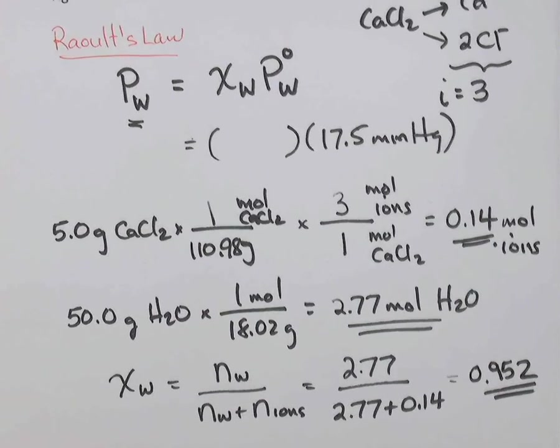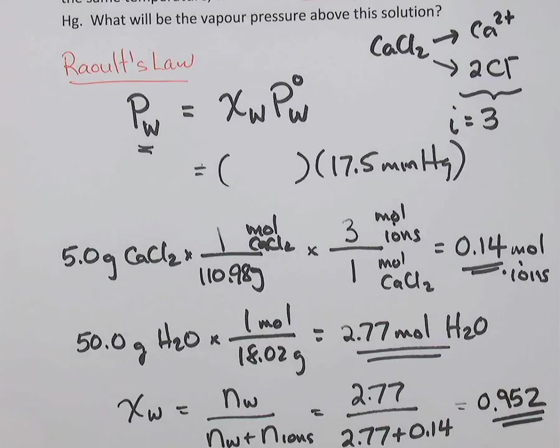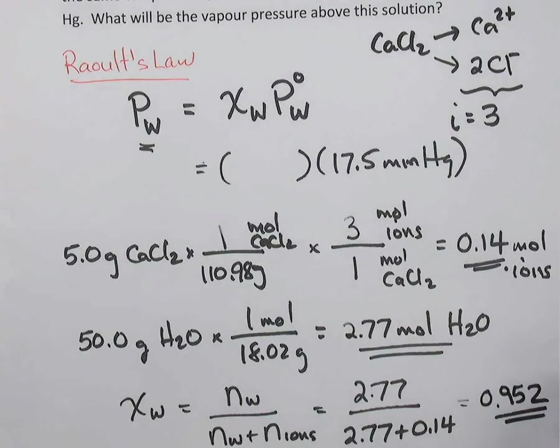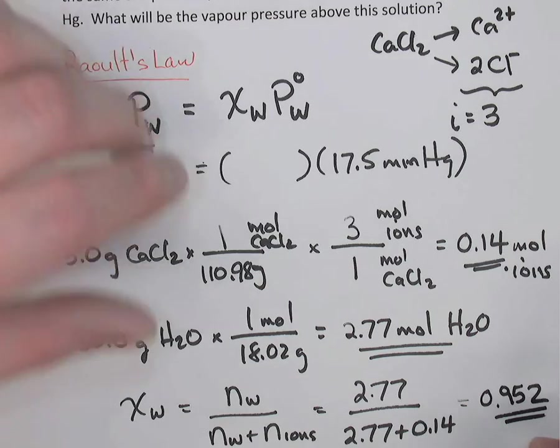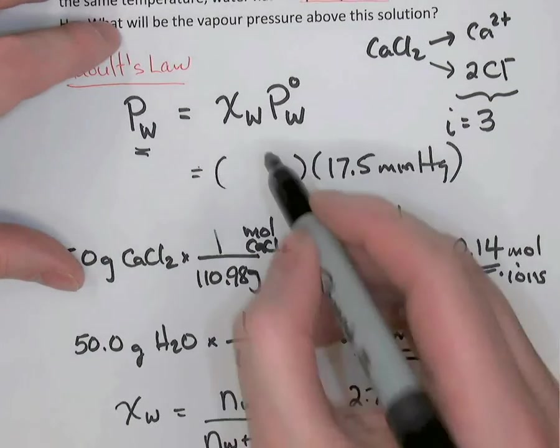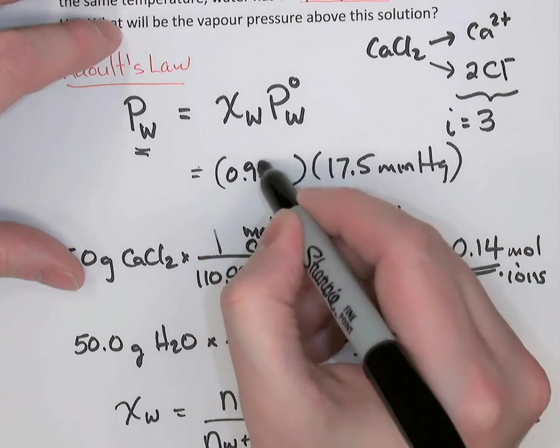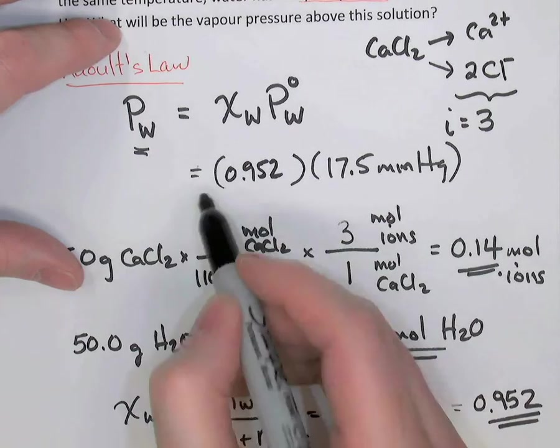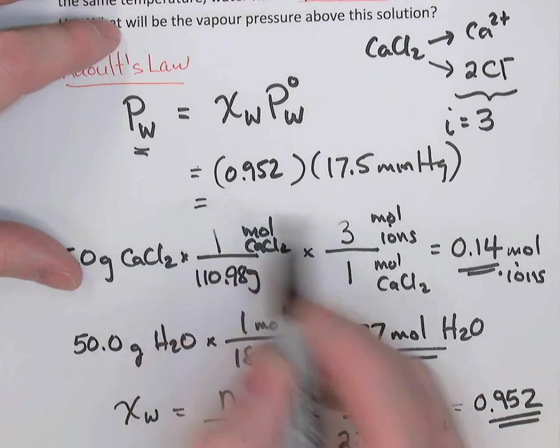And that's something to keep in mind. Whenever you make a solution, even a pretty concentrated one, you'll still have, in terms of mole fractions, mostly solvent. So we have 0.952 as the mole fraction of the water. And now we can just multiply those two things.